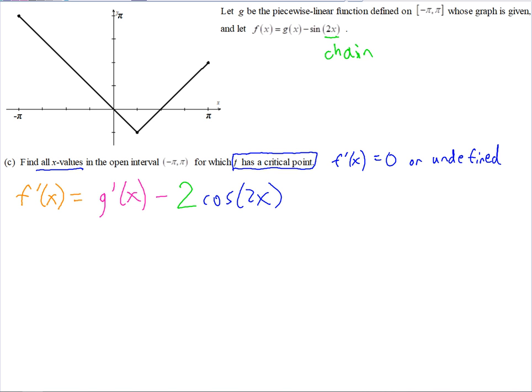The derivative of 2x is 2, so it would be 2 times cosine(2x). Alright, so here's where it gets a little tricky because g', we don't have the equation of, we have the graph instead. So let's first see if anything makes this undefined. Well, where is g' undefined? Right here, this is π/4. So x = π/4 is a critical number because it's got a corner right there on the graph.